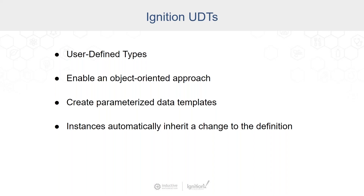When you're collecting data from equipment that comes in as tags, you could just have a flat structure or even a folder structure to represent all of this data as tags inside Ignition. But to follow an object-oriented approach, a better way is to make parameterized data templates or a data model. You take all the tags that are coming and define real-world structures. Every time you have a real-world instance of that object, you want to represent that data in the same way. When you use a UDT, these instances can be based on a definition and automatically inherit any change that you make to that definition.